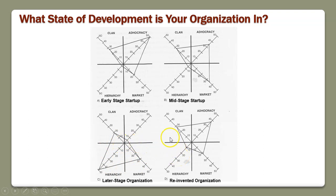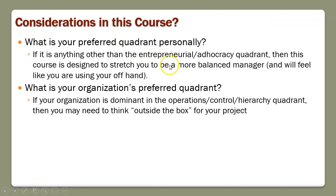What happens with a lot of organizations is a new executive director will bring in new life and new innovation. A key thing in this course is to consider not only who you are but who your organization is, because that's going to affect how you go through this. If your preferred quadrant is anything other than the entrepreneurial adhocracy quadrant, this course is designed to stretch you to be a more balanced manager. If your organization is dominant in the operations control hierarchy quadrant, you may need to think outside the box for your project.